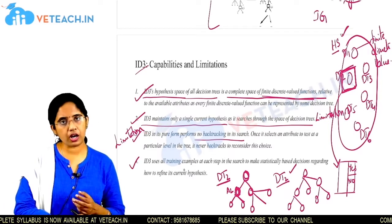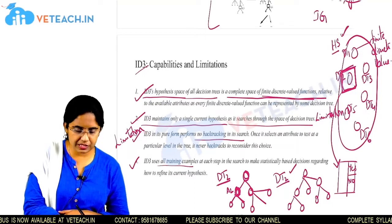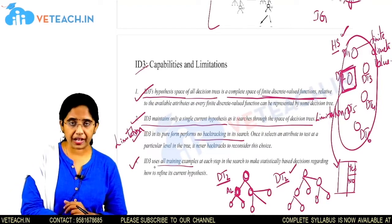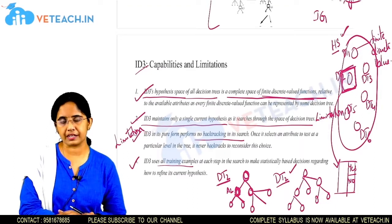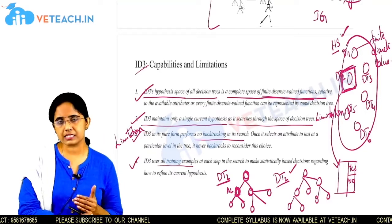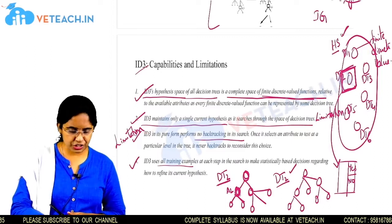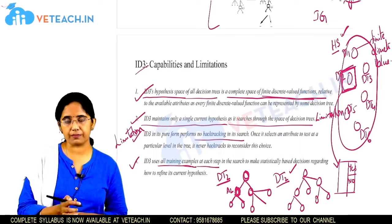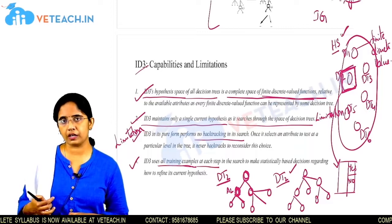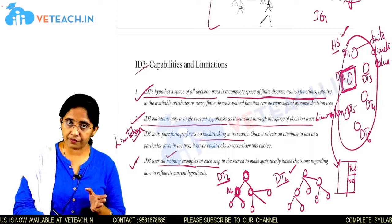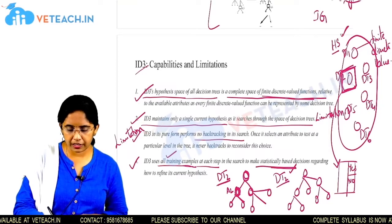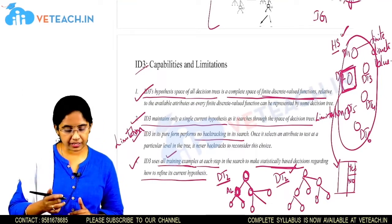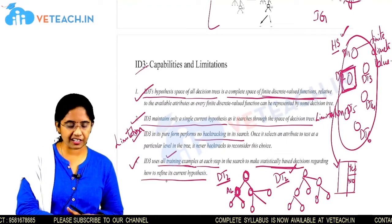ID3 uses all training examples. As we saw in the decision tree examples solved earlier, during the process of generating a decision tree for a given training data set, all instances are used. At each and every step of the ID3 algorithm, all training examples are considered, and we calculate information gain on all attributes of the training data set in order to refine and get the final hypothesis. This is one of the important capabilities of the ID3 algorithm.